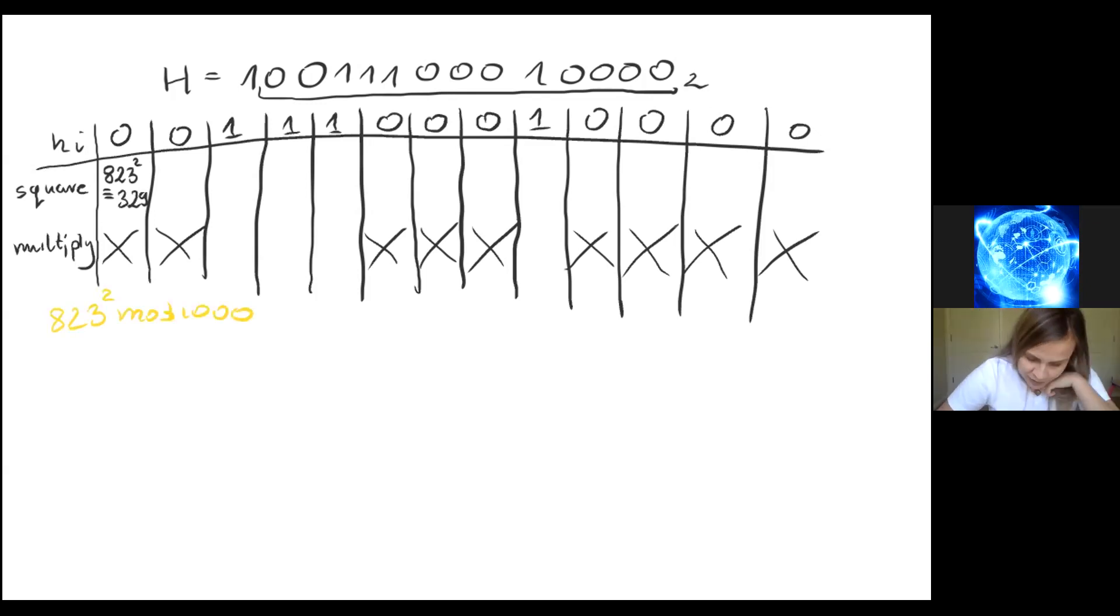Now in the next step we have 329 squared, which is congruent to 241. Then we have 241 squared, which is congruent to 81. Here is 1, so we also have to multiply 81 times 823.